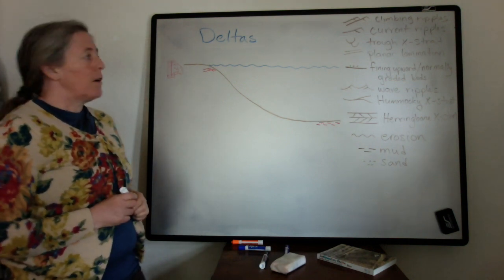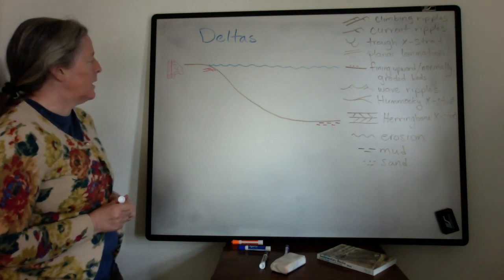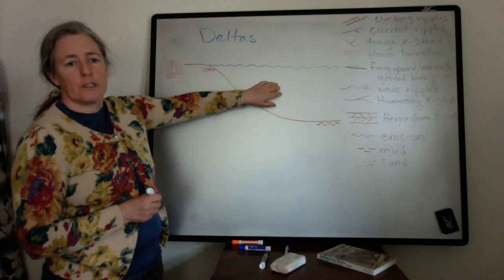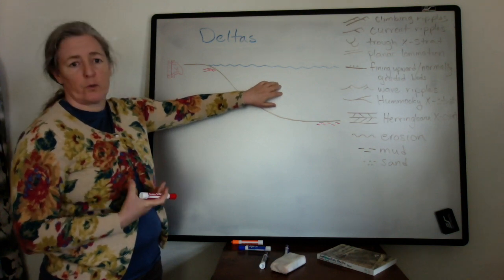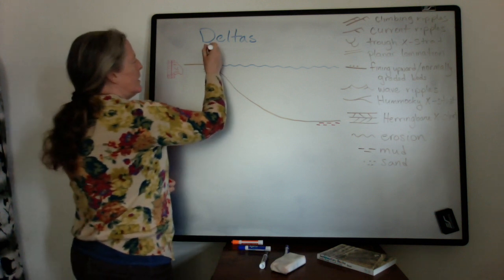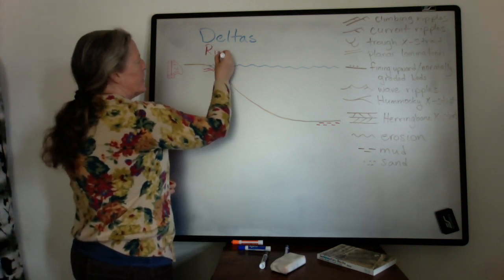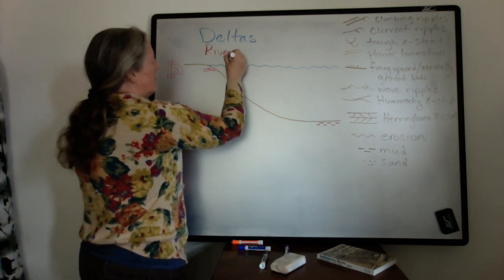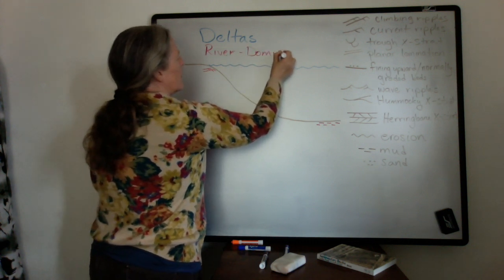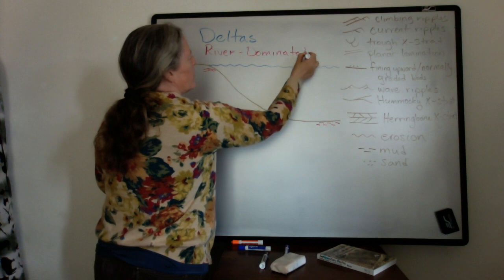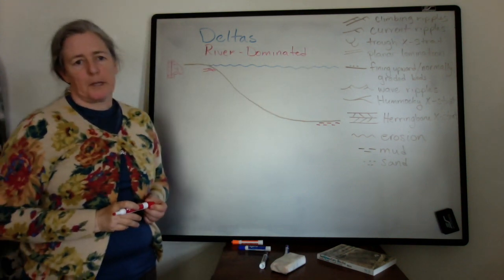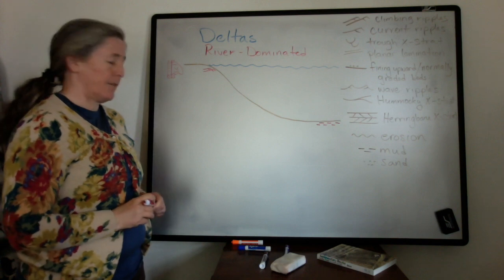I'm going to start off with a delta where the water, the lake water or the ocean has very few storms and very few tides. So this is going to be a river dominated delta, which means that the fluvial processes are the ones that are predominantly shaping the characteristics of the delta.